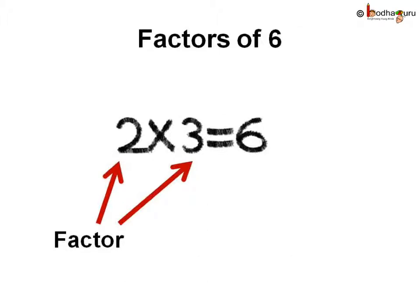Factors are what you can multiply to get a number. Like we multiply 2 and 3 to get 6. Here 2 and 3 are the factors of 6.